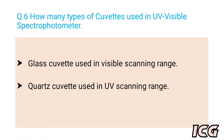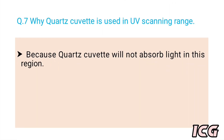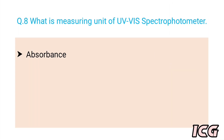The next question is: how many types of cuvettes are used in UV-Visible spectrophotometer? The answer is generally two types are used: the first one is glass cuvettes, used in the visible scanning range; the second one is quartz cuvettes, used in the UV scanning range. Quartz cuvettes are used in the UV range because they do not absorb light in this region.